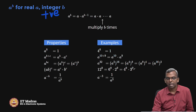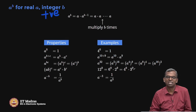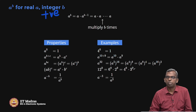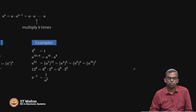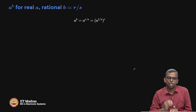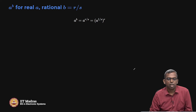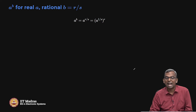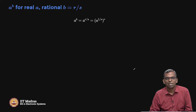So, if a is real and b is a positive or negative integer, it is a very easy problem — we can do a^b very easily. Now let us slowly push to a case where a is real and b is a rational number r/s.